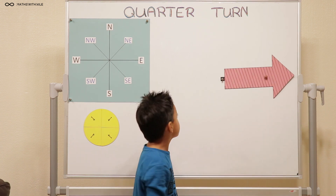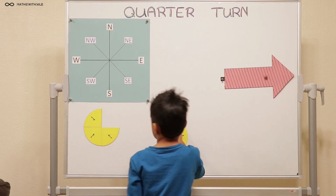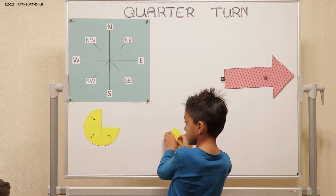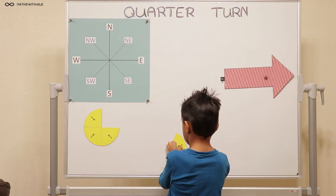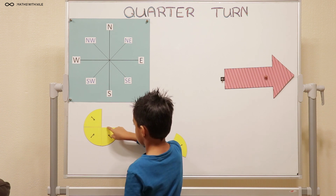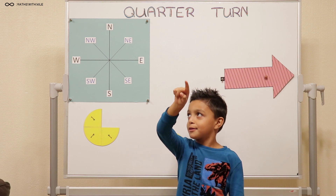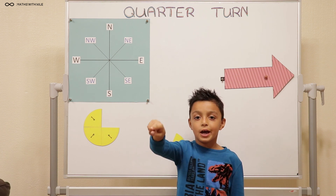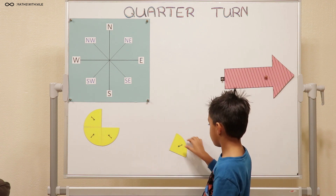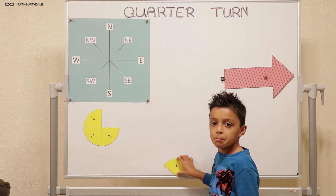Can you remove one of the quarters so we can see the turn? Can you line out the quarter turn with your fingers from where you've removed? And then here it is. So you've just moved that arrow a quarter turn clockwise.